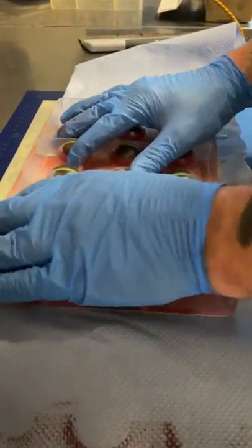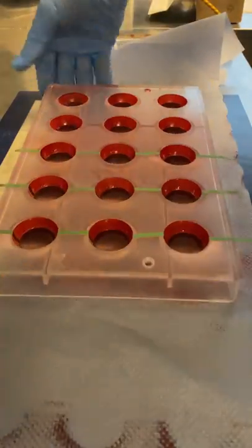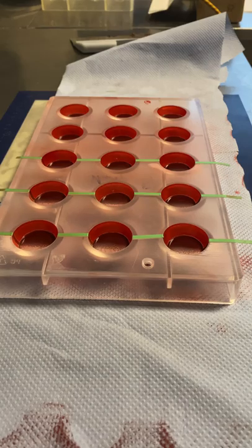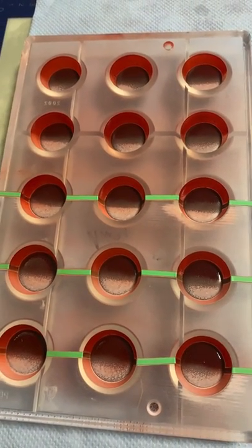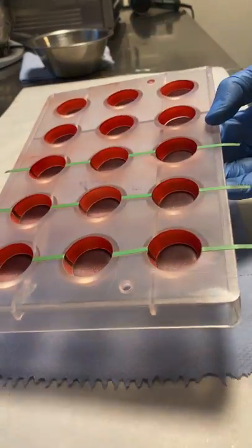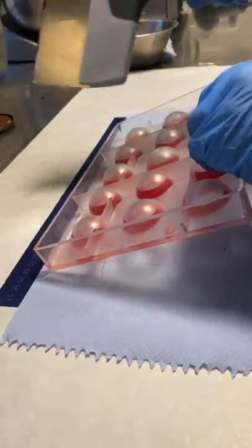Now you are ready to clean the moulds on a dry paper cloth. While it's still wet, dry off the cocoa butter. Now let the chocolate crystallize for at least 20 minutes in the fridge and then you can remove them from the moulds.